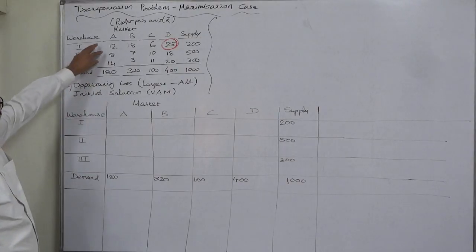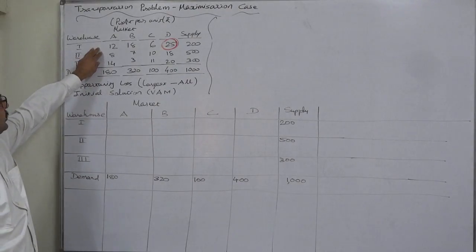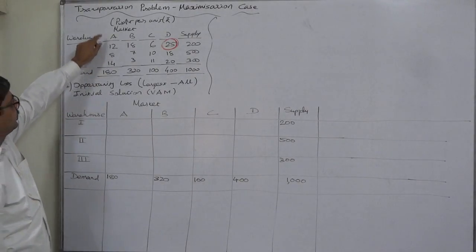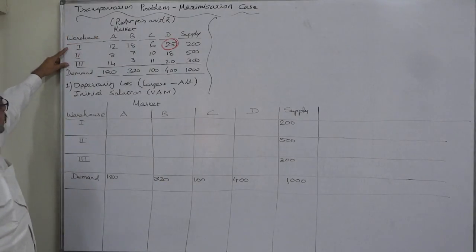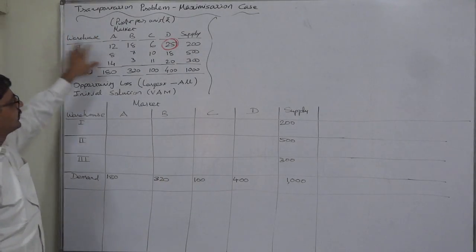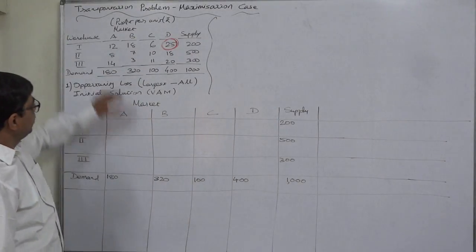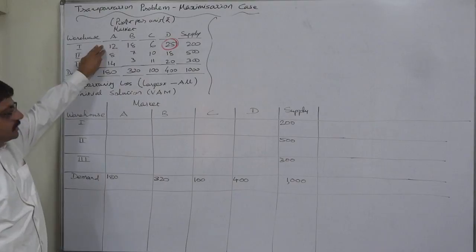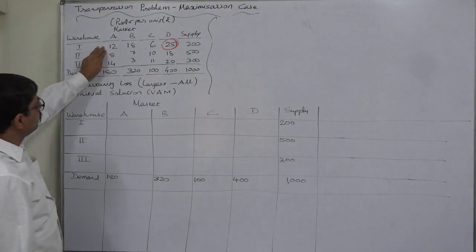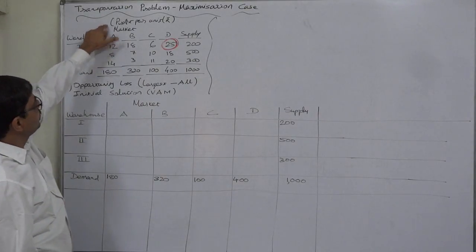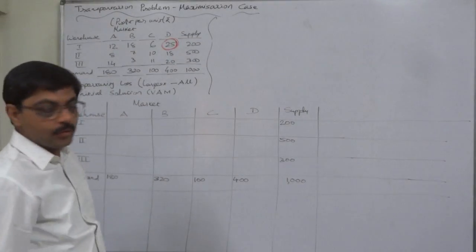The transportation matrix given here is of a company having three warehouses and four different marketplaces. But instead of giving per unit transportation cost of the goods, we have been given profit per unit in rupees.